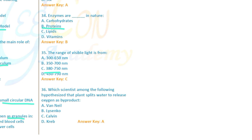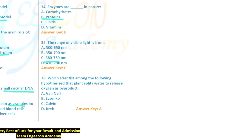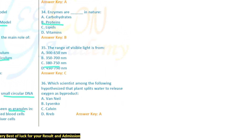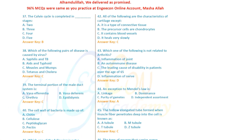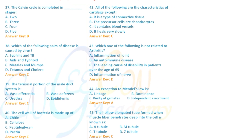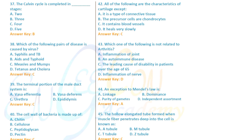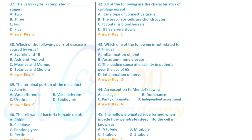Question: Which scientist hypothesized that plants split water to release oxygen as a by-product of photosynthesis? Question 37: The Calvin cycle is completed in three stages — the Calvin cycle has three key stages.